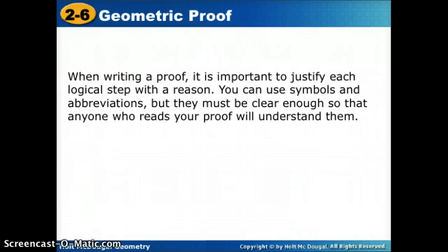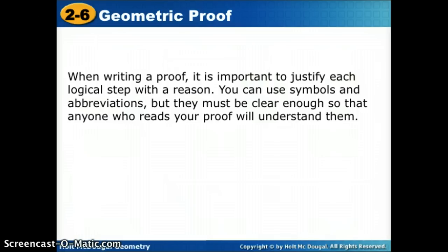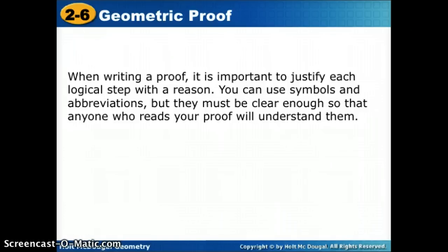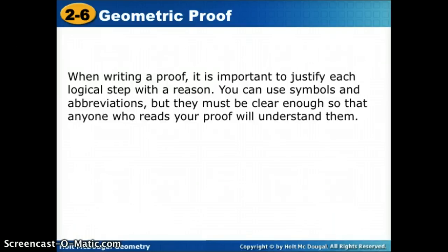When we're writing a proof, it's important to justify each logical step with the reason. We're trying to justify everything we're doing step by step and backing it up with the reason. You can use symbols or abbreviations, but they must be clear enough so that anyone who reads your proof will understand them. For example, the word subtraction looks very similar to substitution, so 'sub' will not be enough — you'd have to say a little bit more so that we know which one you're talking about.